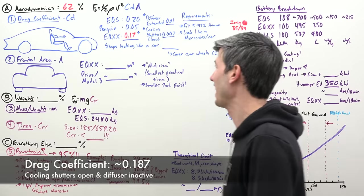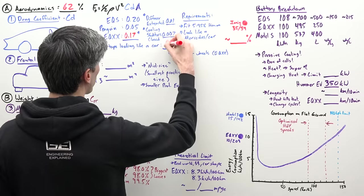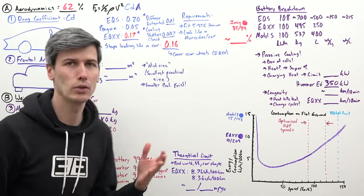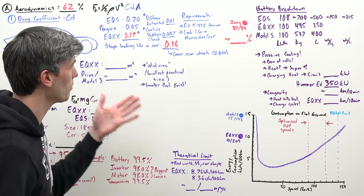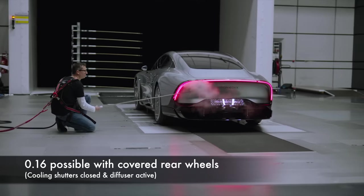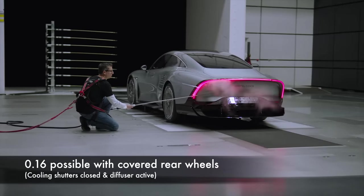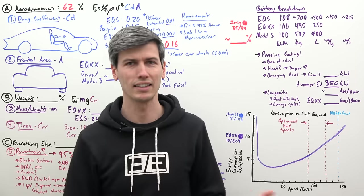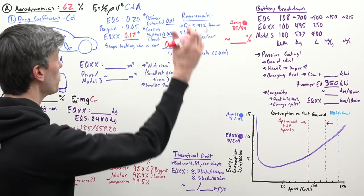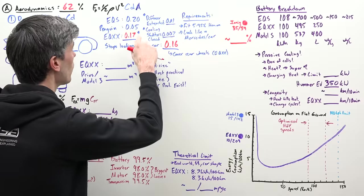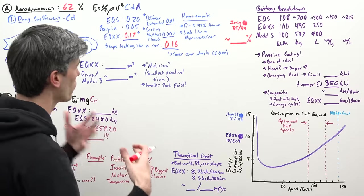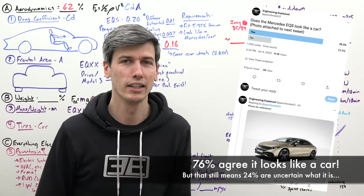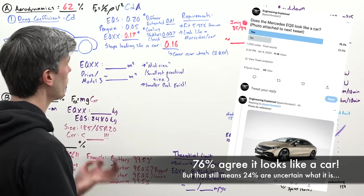Mercedes says that if you get to a drag coefficient of around 0.16, it stops looking like a car. One example is Mercedes said they could have gotten down to 0.16 but they would have had to cover the rear wheels. And they didn't want to cover the rear wheels because it's ugly. It is possible to get below 0.2 but it starts to look less and less like a car.